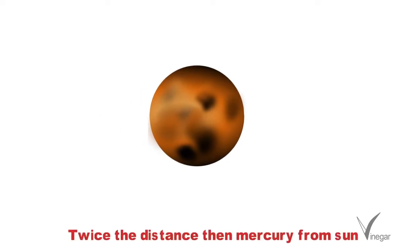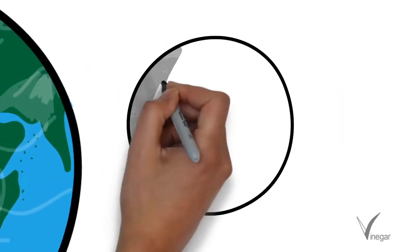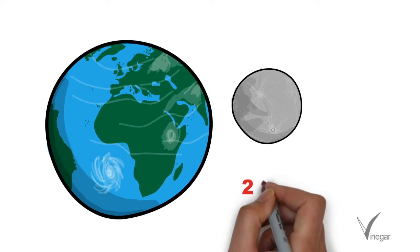The second planet after mercury is venus and it is twice the distance from the sun. The third planet is earth. Earth has a natural satellite called the moon. It revolves in eastward direction around earth and completes a revolution in 27 days.